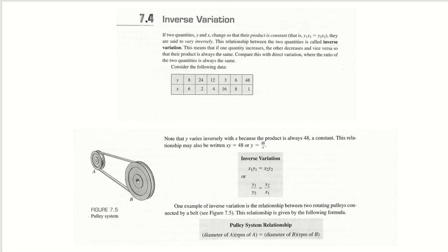This video instruction is for ratio and proportion quiz for inverse variation. If two quantities y and x change so that their product is constant, that is y1 times x1 equals y2 times x2, they are said to vary inversely.